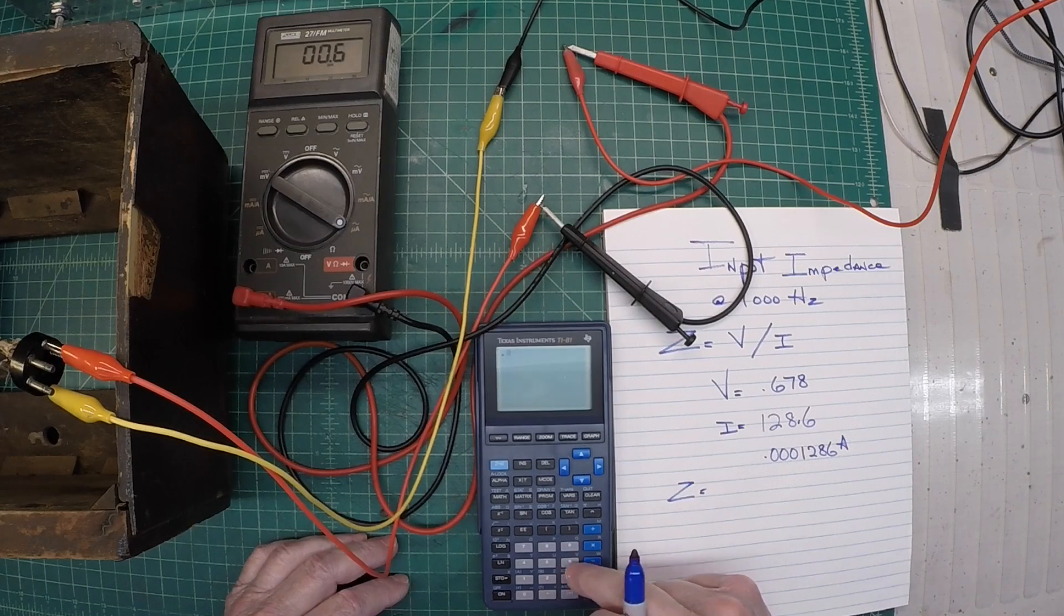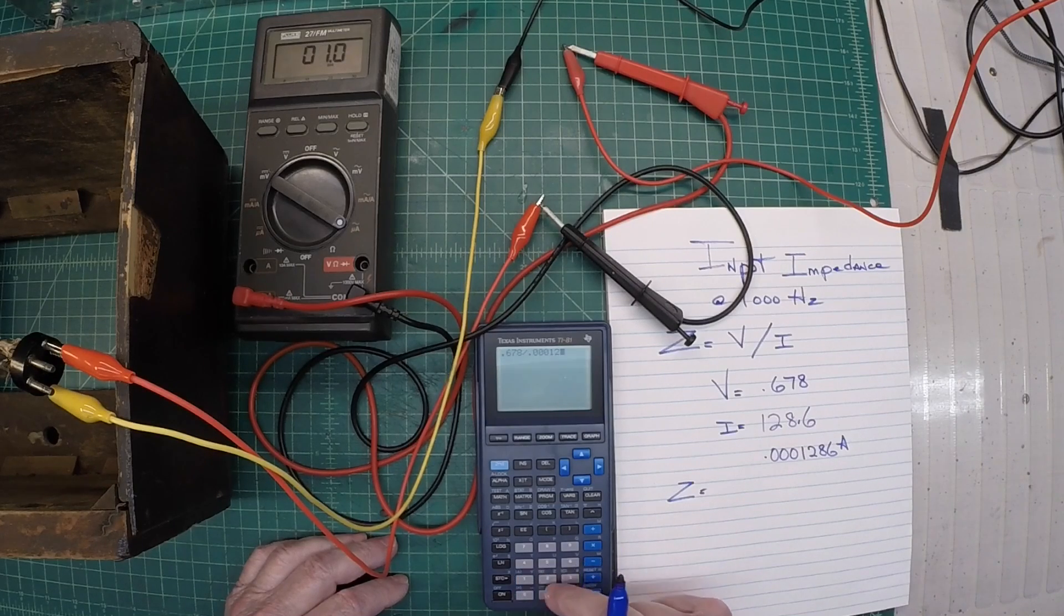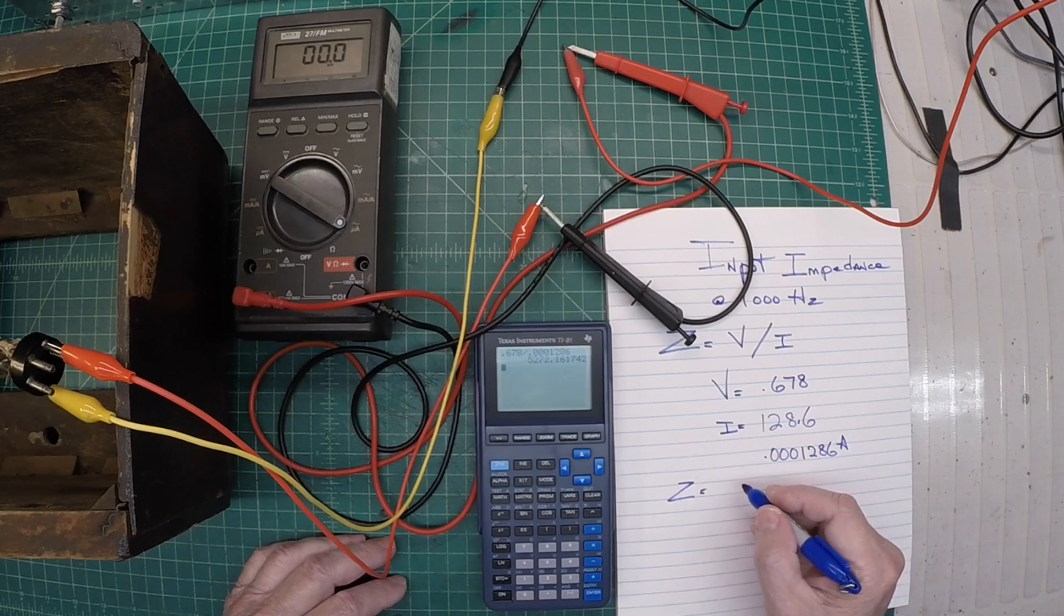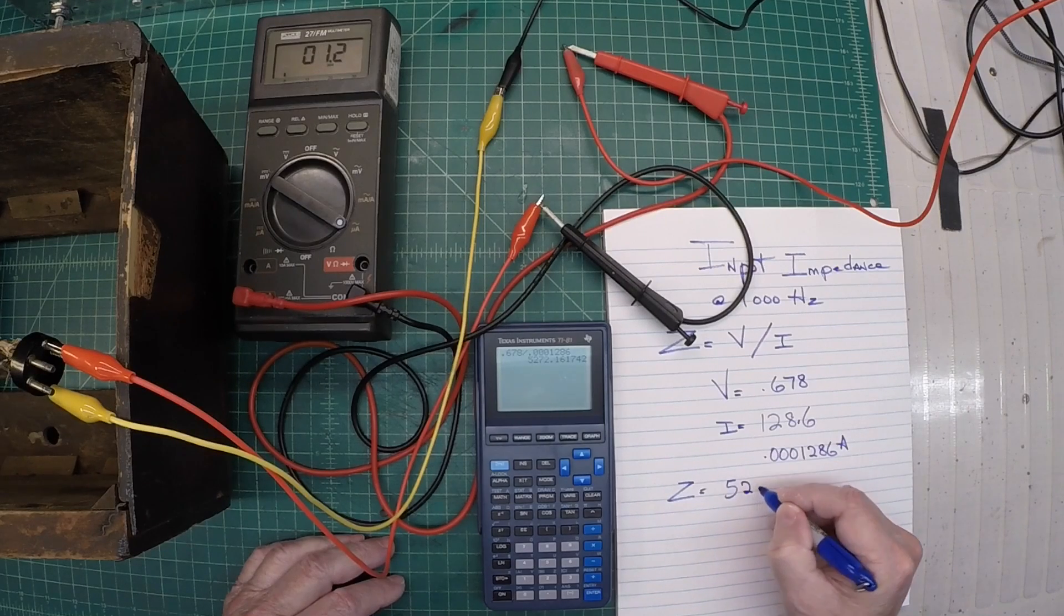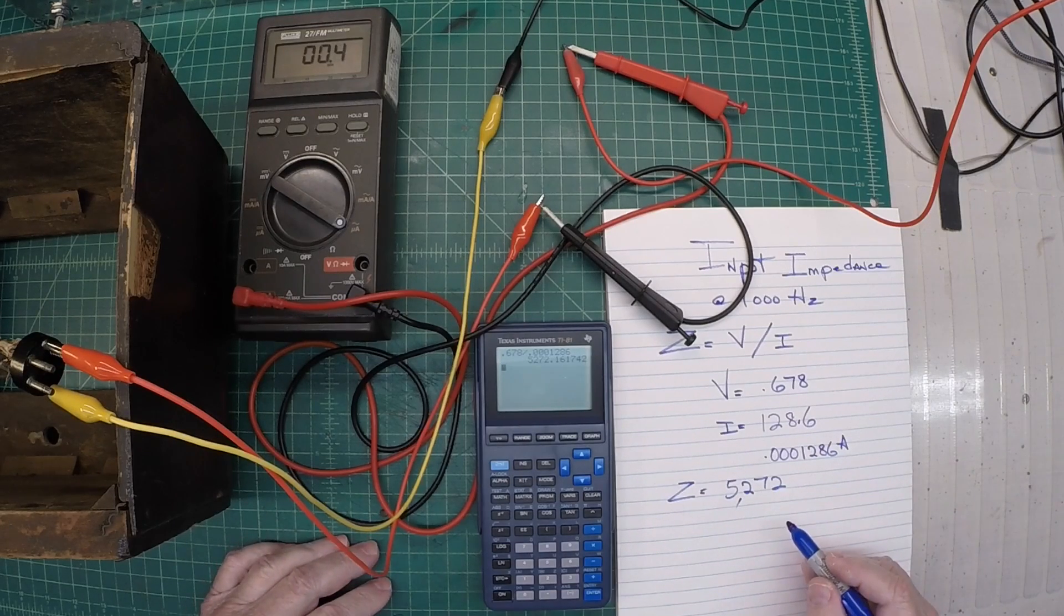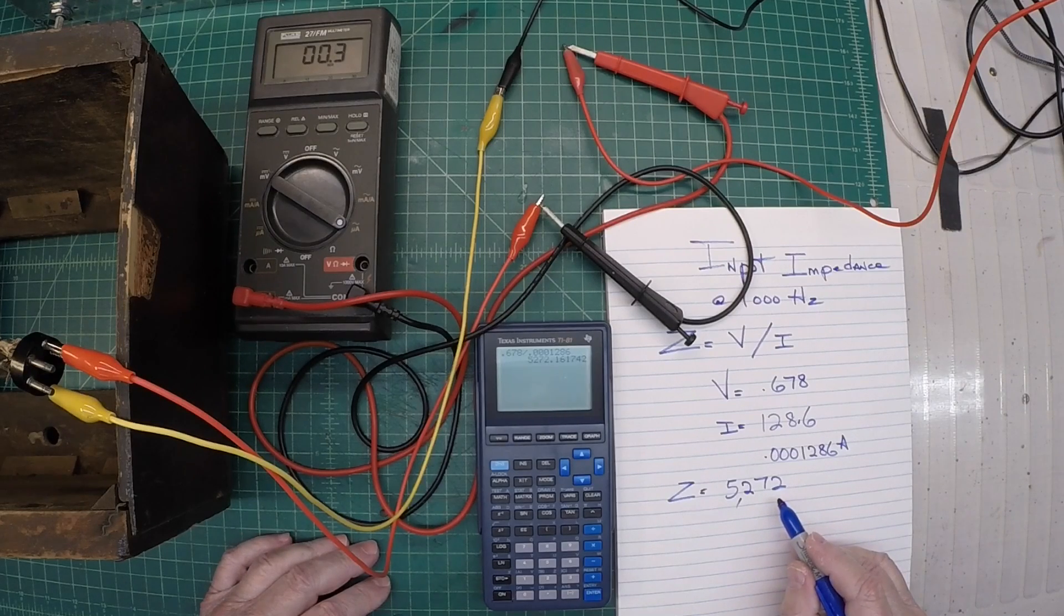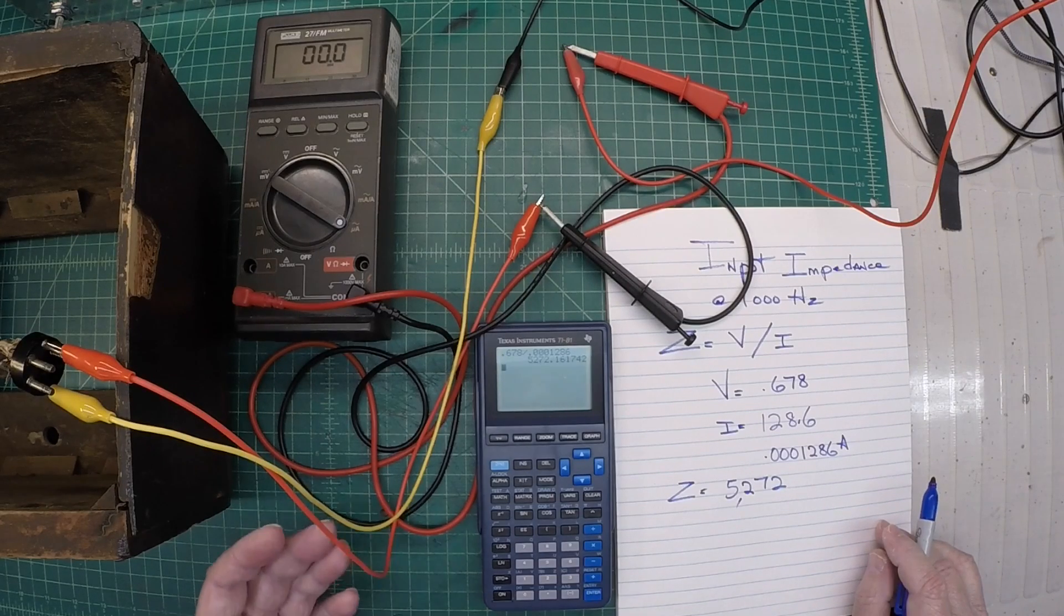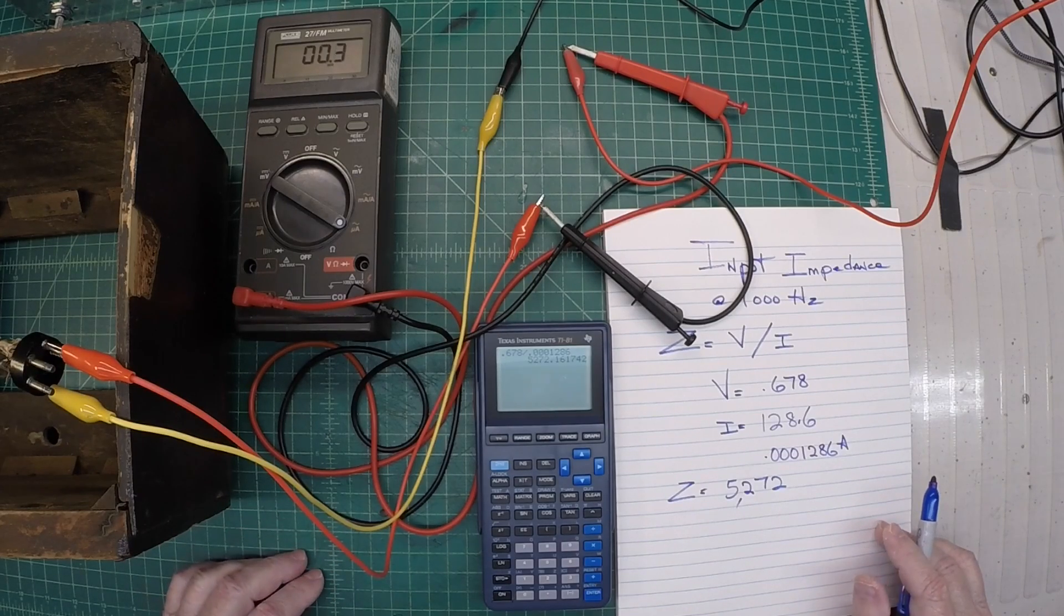So we said 0.678, we'll divide by 0.0001286. And I'm not sure if that's showing up on camera because of the glare or not. But it looks like we've got 5272 and some change. And I'll just leave it here at this number. So that's perfect. That's what I'm looking for here. 5272 right in the middle of my 5,000 to 5,500. So that would be our approximate input impedance here based on what's being reflected back from the speaker.